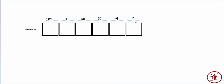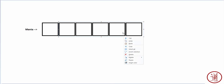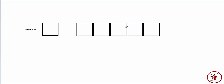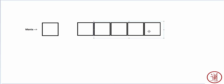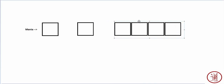One thing we could do is actually just break up the array. Why do the elements have to be sequential? Why can't we just break them apart? This way we can use the memory more effectively.